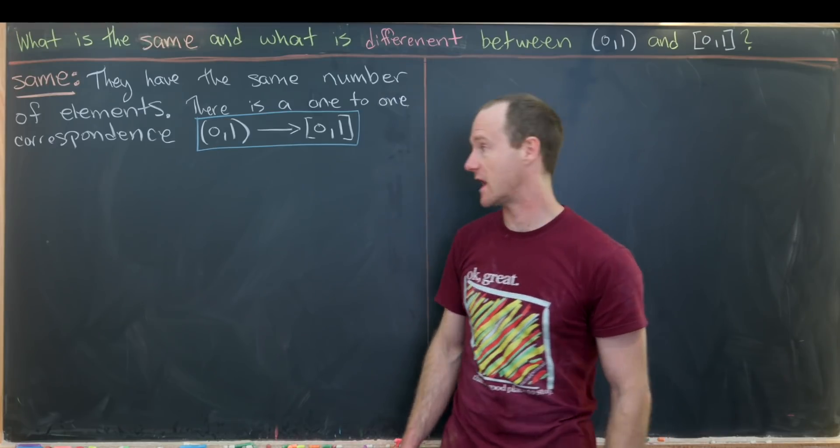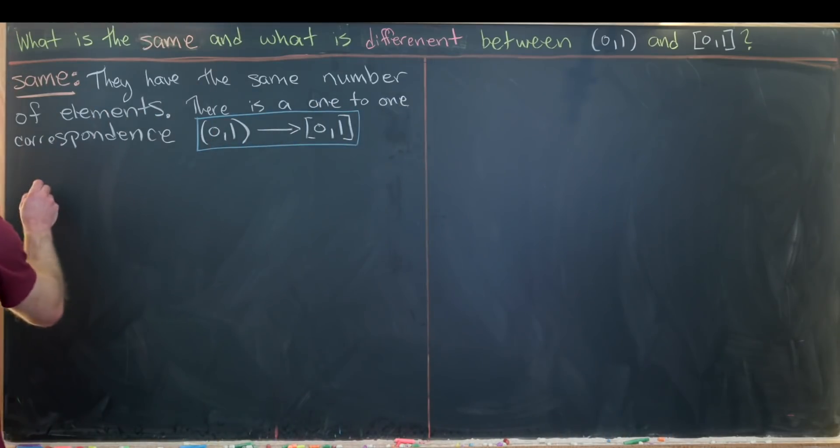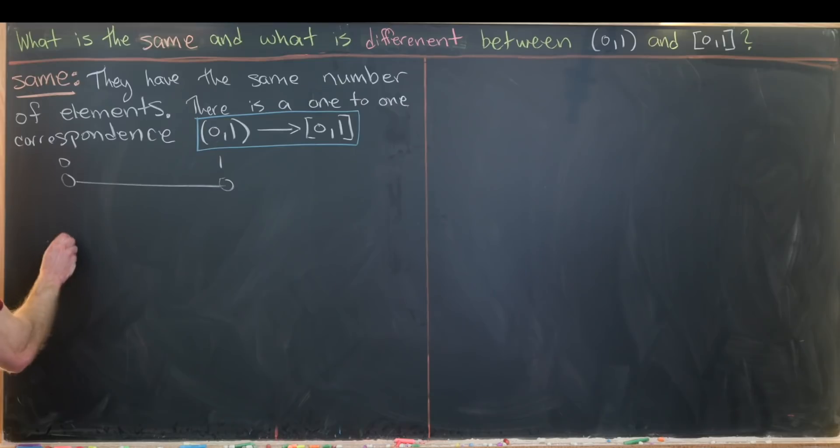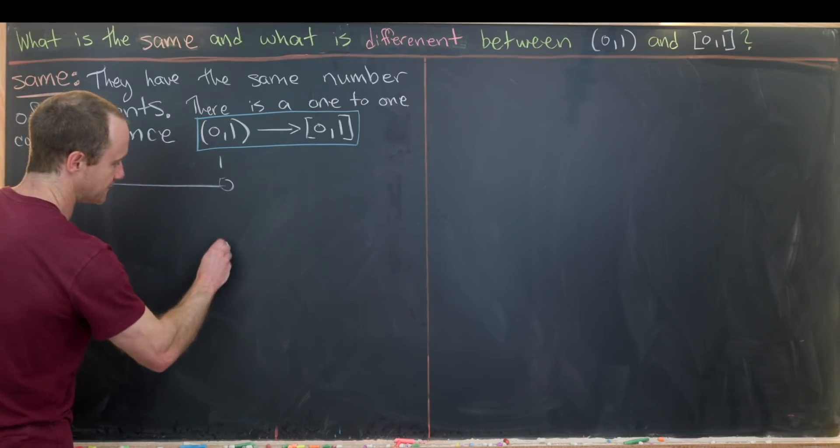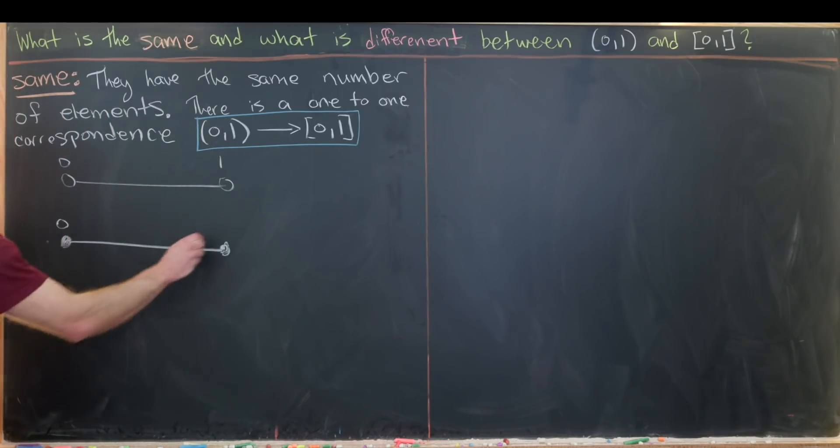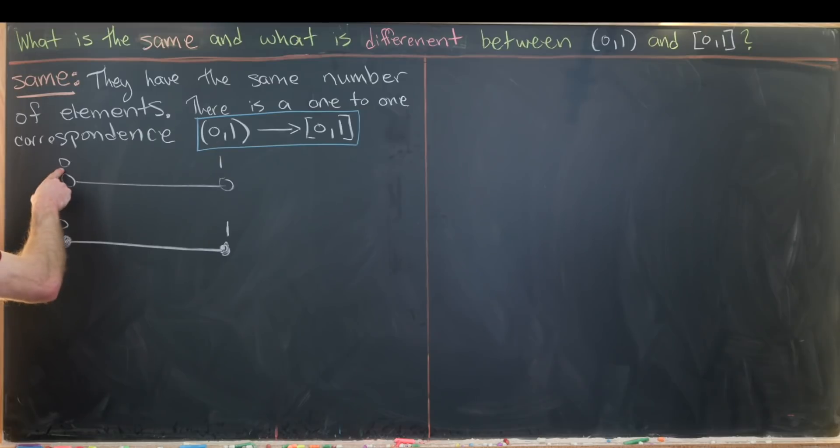So I think that's a nice kind of graphic of the way to think about it, but maybe we could write down an explicit function where we define the sequence carefully. So let's do that. So let's start with our open interval (0,1). So I'll put that here. So let's say this is the number 0 and this is the number 1. And then we'll put our closed interval [0,1] here. So again, this is going to be the number 0 and this is going to be the number 1. So here we include 0 and 1. Here we do not include 0 and 1.